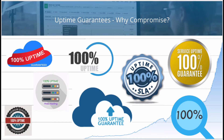Uptime guarantees — why compromise? Many companies give 100% uptime guarantees, especially hosting companies, cloud vendors, and large data centers. In the real world, 100% uptime is hard and cannot be attained, but 99.9s can be achieved. So why the need to compromise? You also consider choosing your service providers and helping solve your problems — why spend a lot of money for disaster recovery and business continuity planning?